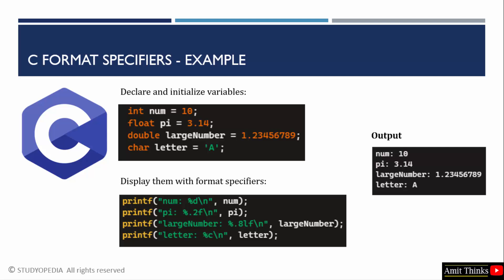So guys, we saw what are format specifiers in C language. It is mainly used in printf and scanf. So, in the upcoming lessons, we will frequently use them to print different types of data type values. Thank you for watching the video.